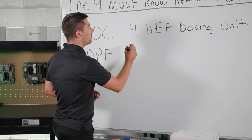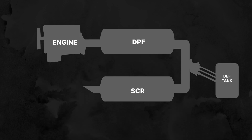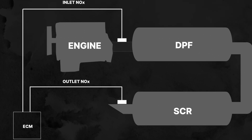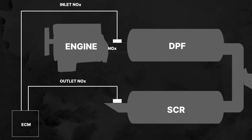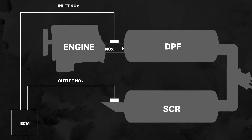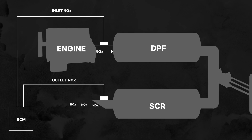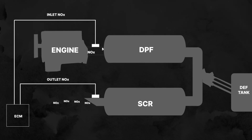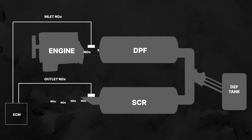The fifth after-treatment component is called the NOx sensors. You have two NOx sensors on your truck: an inlet NOx sensor and an outlet NOx sensor. The NOx sensors monitor nitrous oxide levels inside your exhaust system and provide real-time data to your ECM for regulating the DEF injection.